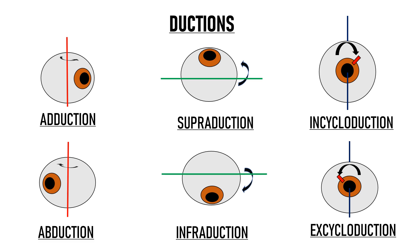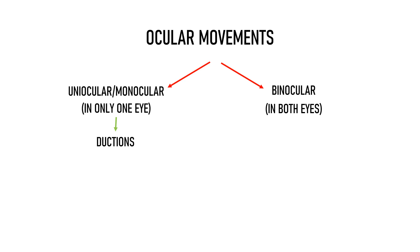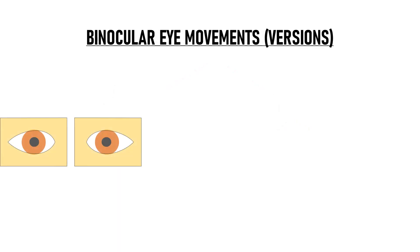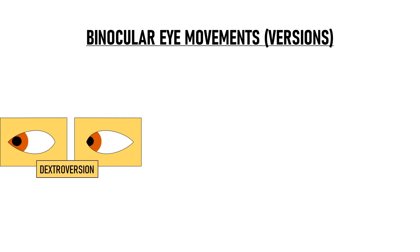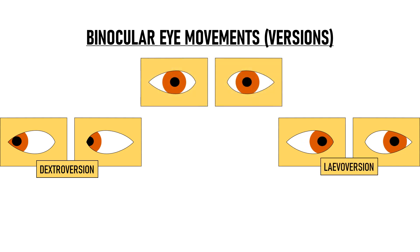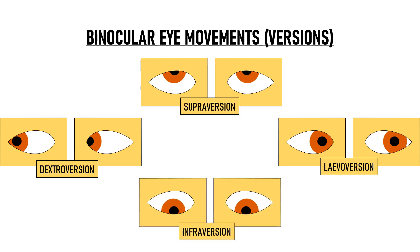Now let's talk about binocular eye movements. Binocular eye movements are of two types: versions and vergences. Versions refer to binocular eye movements in which both eyes move together in the same direction — these are conjugate eye movements. When both eyes look to the right it is called dextroversion, to the left is levoversion, upward is supraversion, and downward is infraversion.